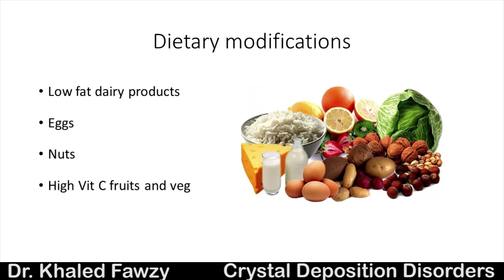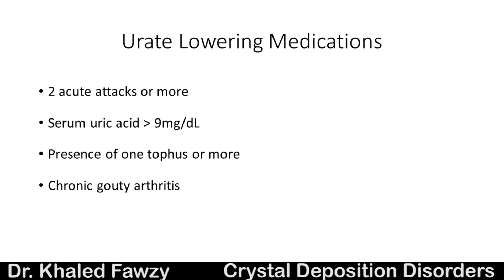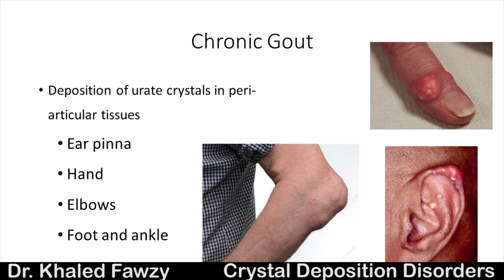The indications for urate-lowering medications are: two or more acute gout attacks, serum uric acid above 9 mg/dL, one or more tophi, and chronic gouty arthritis. The first-line treatment should be allopurinol or febuxostat. If these don't work, probenecid can be used — it is a uricosuric drug that increases the excretion of urates in the urine, but be careful as it could induce renal stones if urate excretion over 24 hours exceeds 800 mg.